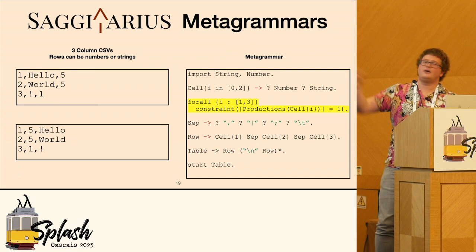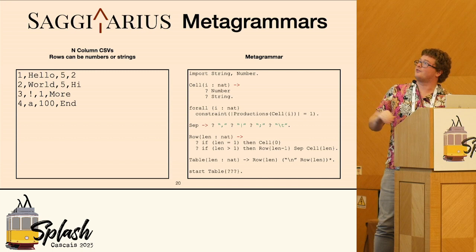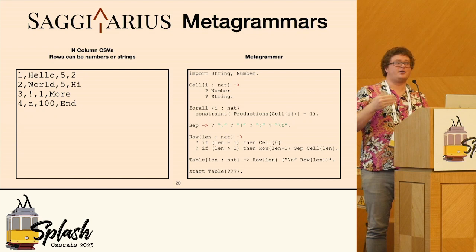So now I want to step it up a level. We're not doing three-column CSVs — we're doing N-column CSVs. The format should be largely the same. We've got the cell I's, but instead of I ranging from zero to two, I'm having I be a natural number.